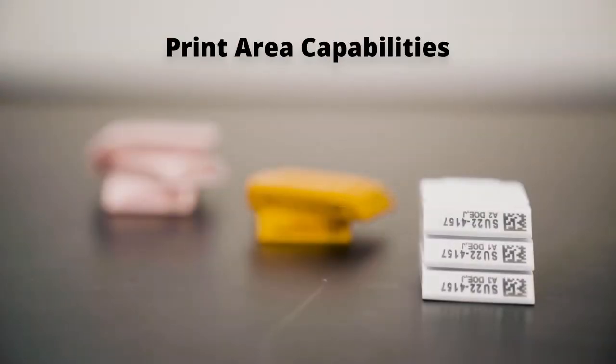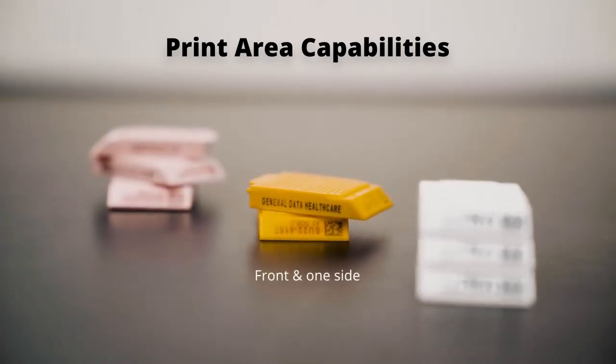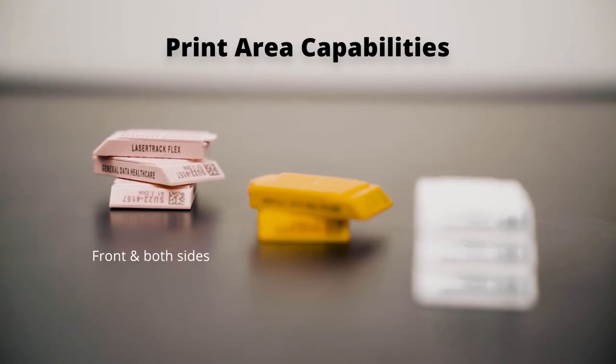Flex cassette printers can be configured to print on the front of the cassette only, the front and one side of the cassette, or the front and both sides of the cassette, with the ability to upgrade remotely anytime.